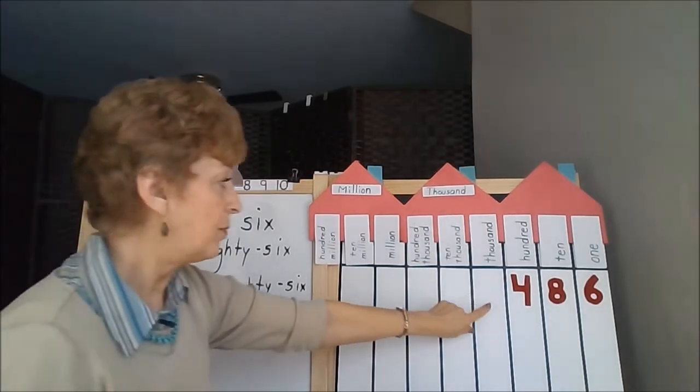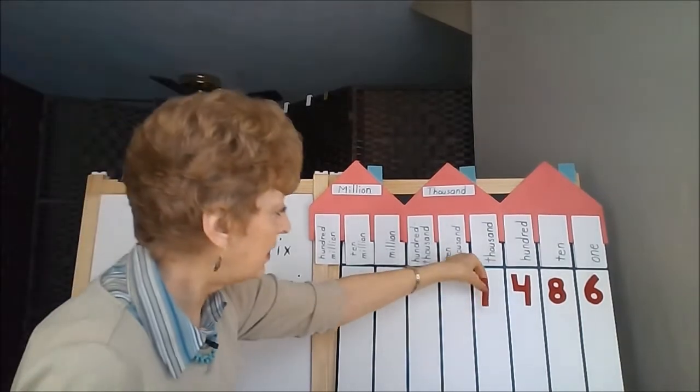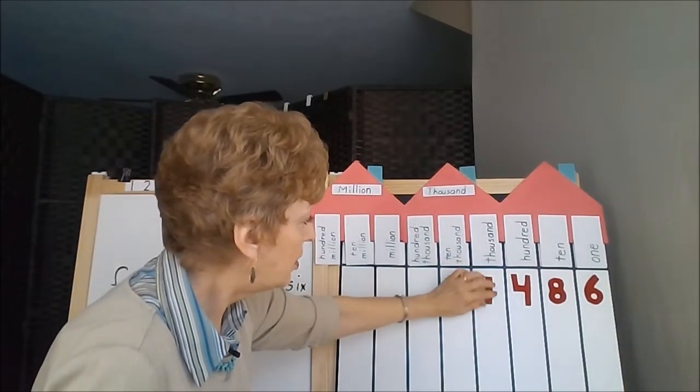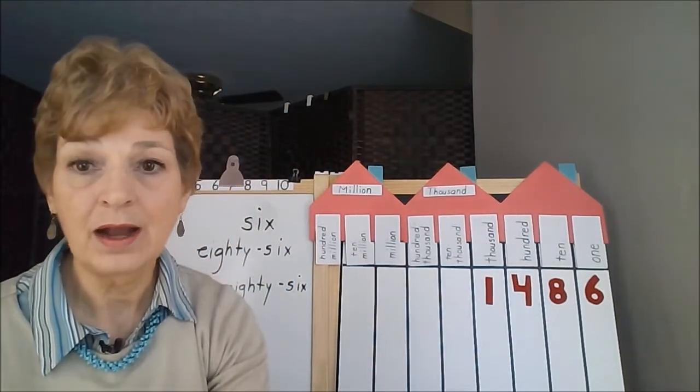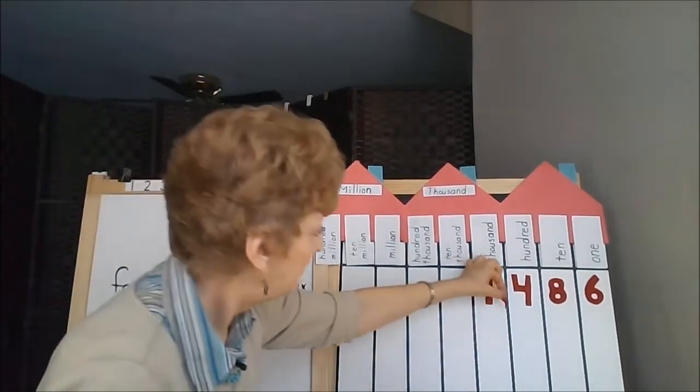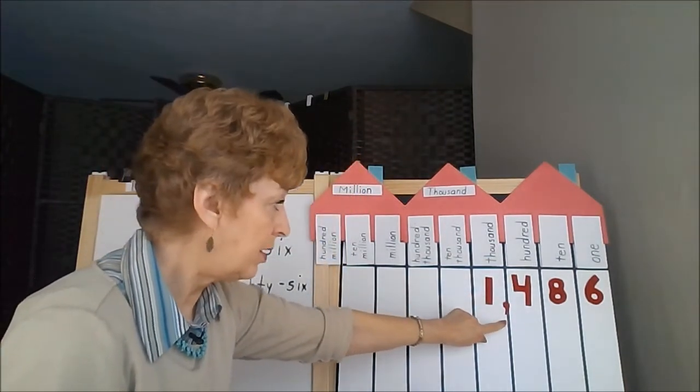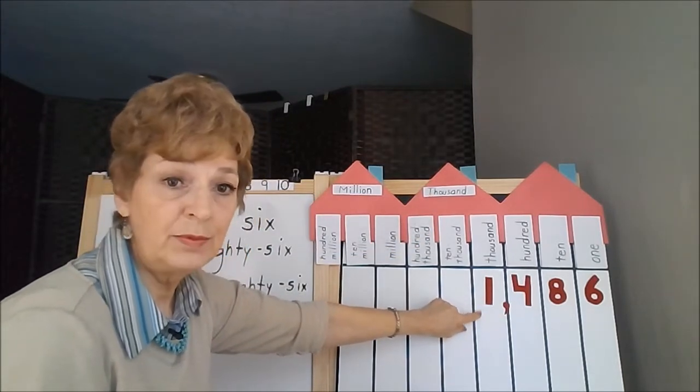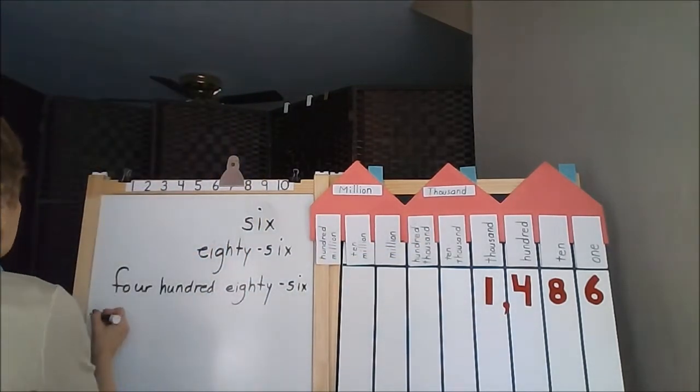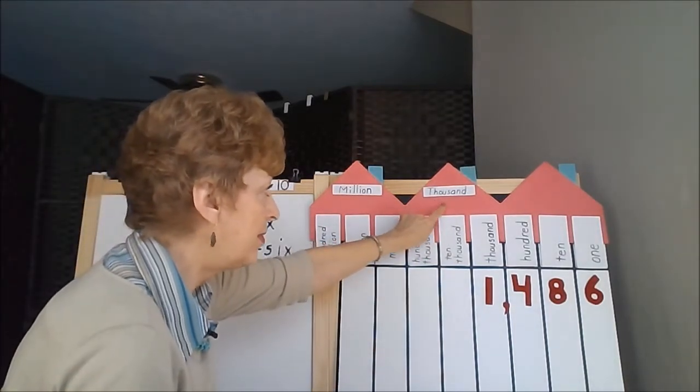But as soon as I add one more number to the next column, I'm passing a house. I'm going beyond the wall of the first house, so this is where a comma would be needed. Because there's a comma in here, we must stop at the comma and say the family name. So your child would write one, say the family name, thousand.